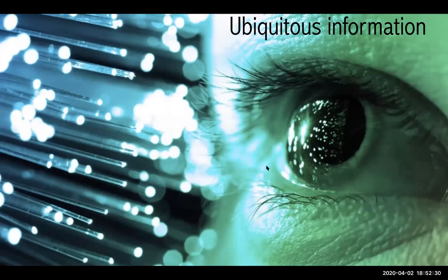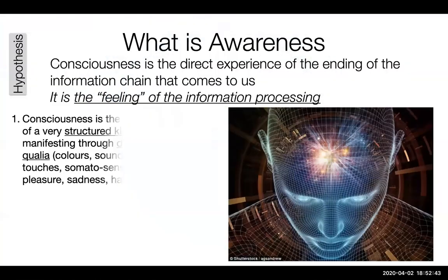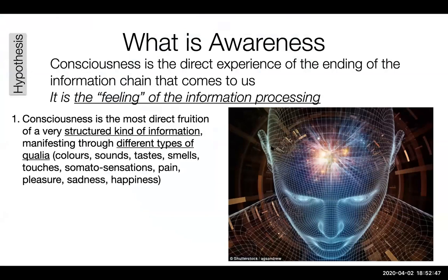Information is everywhere. You imagine light coming to your eyes, going to the optical nerves — and at the end of the story you see something. The idea is that when information comes to you it's not just your eye, which is only part of your body, and then you feel it. Consciousness is the feeling of the information which is supported by you as a system — more generally, the feeling of the full processing of information at the last stage. Consciousness is the direct experience of the ending of the information chain that comes to us.